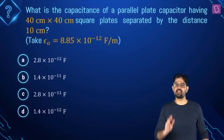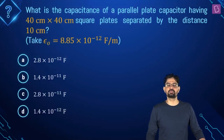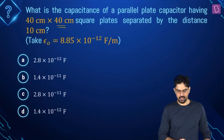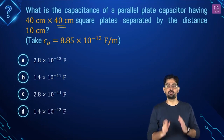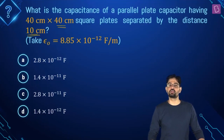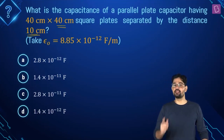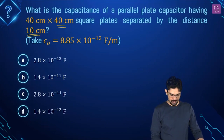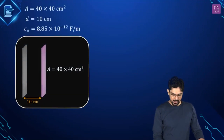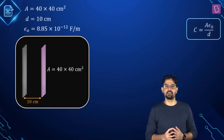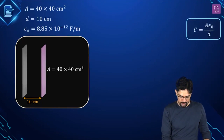This problem is fairly simple. You have a parallel plate capacitor whose plates are square in shape with edge length 40 cm, making the area 40 × 40 cm². The two plates are separated by a distance of 10 cm, and the value of ε₀ is given. You have to find the capacitance in Farad. This is a formula-based question where the capacitance of a parallel plate capacitor is C = Aε₀/d.